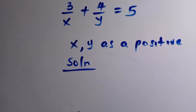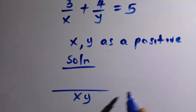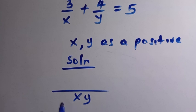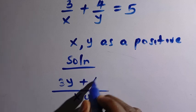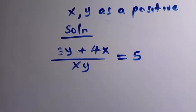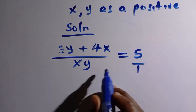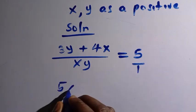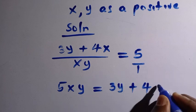From the given equations we have to find the LCM first, and the LCM here is xy. By applying the cross method from secondary school, we multiply 3 by y to get 3y, and x by 4 to get 4x, which equals 5. By cross multiplying we get 5xy equals 3y plus 4x.